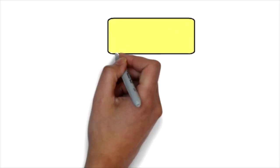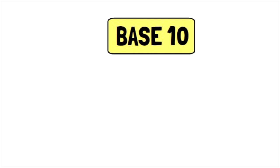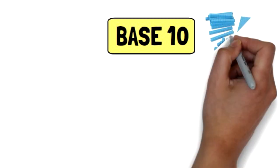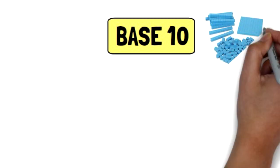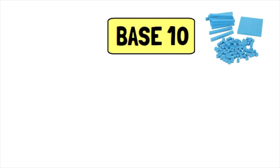The next strategy is called the base 10 strategy. Now, this one stems from using base 10 blocks, which you might remember from being in school yourself. You would get these little packets of cubes, and there would be single cubes to represent ones. Then there would be towers of 10, and then a flat 100. Those are base 10 blocks.